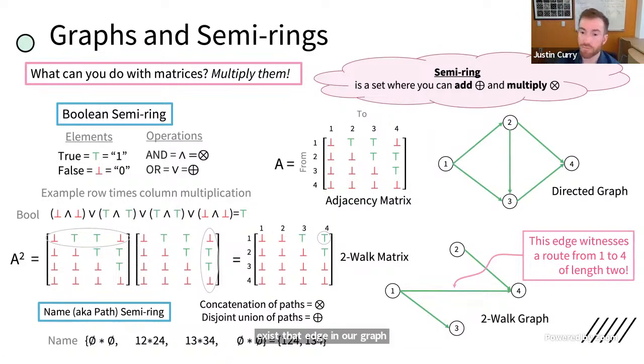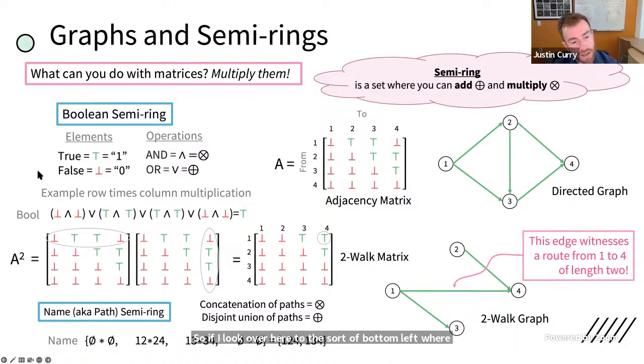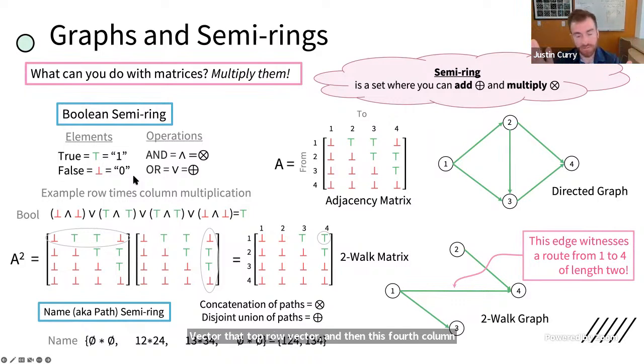Now, why would you want to use a matrix? Well, one thing that you can do in matrices, which isn't obvious if you just think about a graph is that you can multiply matrices. So let's go ahead and ask ourselves, well, if I have a Boolean matrix, does multiplication of matrices even make sense? And I claim it does, right? So if I look over here to the sort of bottom left, where I've got A squared, I've highlighted a row vector, that top row vector, and then this fourth column vector, I might say, well, if I want to do dot product of vectors, I need to at least be able to multiply and then add entries. So does multiplication and addition make sense for Booleans? Yes, it does, because I can think of multiplication as my and operator, and I can think of addition as my or operator.